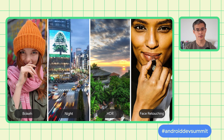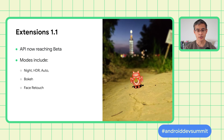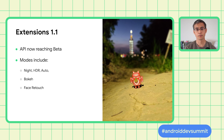Let's talk about extensions. Extensions were introduced in 1.0 alpha. They're a powerful way to leverage extra on-device capabilities. The extensions API will reach beta in 1.1. Extensions provide image effects including night and HDR modes, an auto mode that decides between them, a bokeh mode for portrait effects, and a face retouching mode.